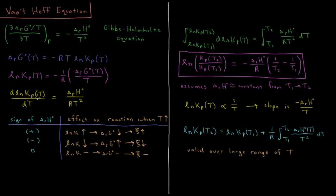If we look at how this changes versus temperature and take the partial derivative of both sides, we have d(ln Kp)/dT equals, from the Gibbs-Helmholtz equation, −(1/R) times −ΔH°/T². This gives us a positive ΔH° of reaction over RT².